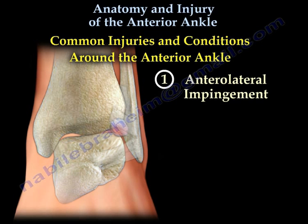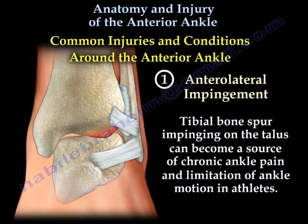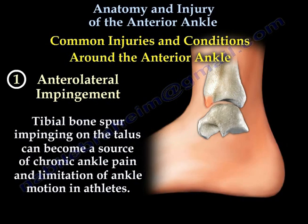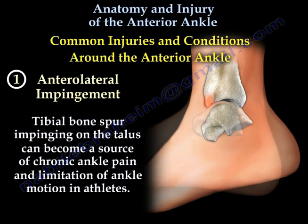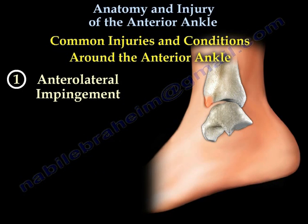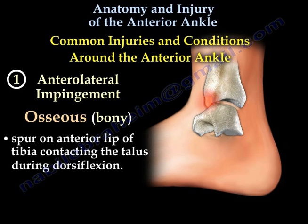This type of impingement may also be bony. A tibial bone spur impinging on the talus can become a source of chronic ankle pain and limitation of ankle motion in athletes. An osseous or bony spur on the anterior lip of the tibia contacts the talus during dorsiflexion.